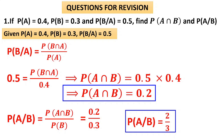For the exam, sometimes P(A∪B) is also given. In that case, use the formula P(A∪B) = P(A) + P(B) − P(A∩B) to find whichever value is unknown.